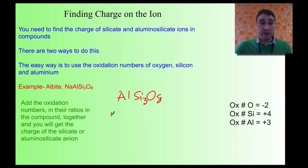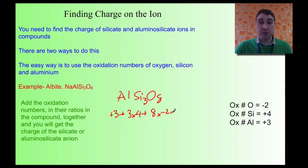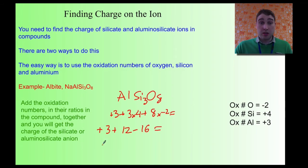Aluminium is plus three, so we've got plus three. We've got three times the oxidation number of silicon, which is plus four — so plus three times four. And plus eight times the oxidation number of oxygen, which is minus two — so eight times minus two. Adding those together: plus three, plus twelve, minus sixteen. That gives us fifteen minus sixteen, which is a charge of minus one overall. So the charge on the aluminosilicate ion is minus one.